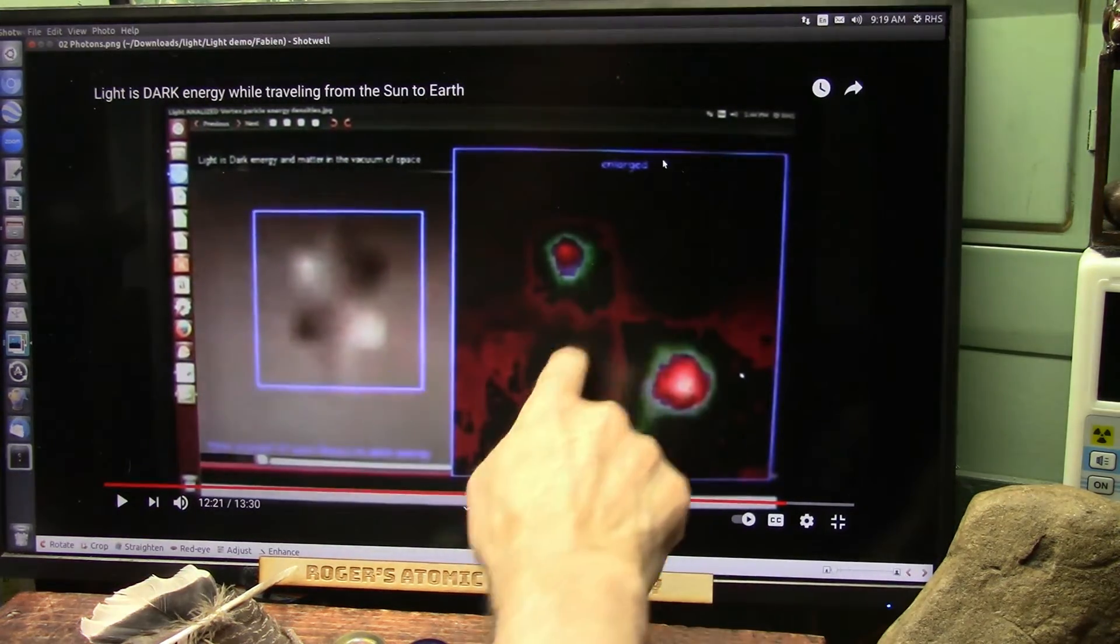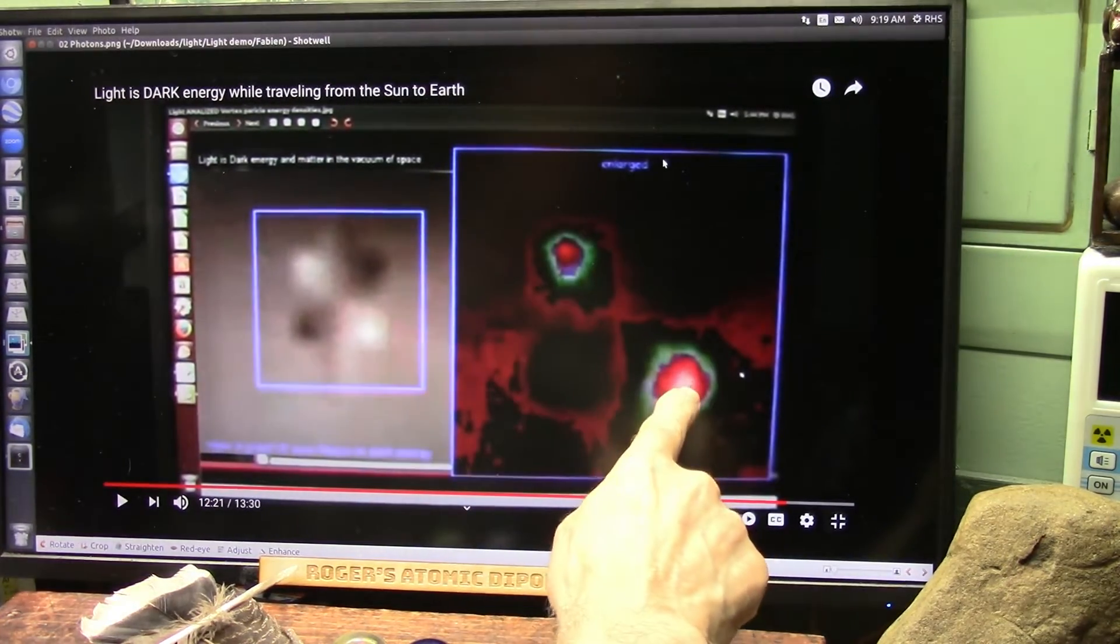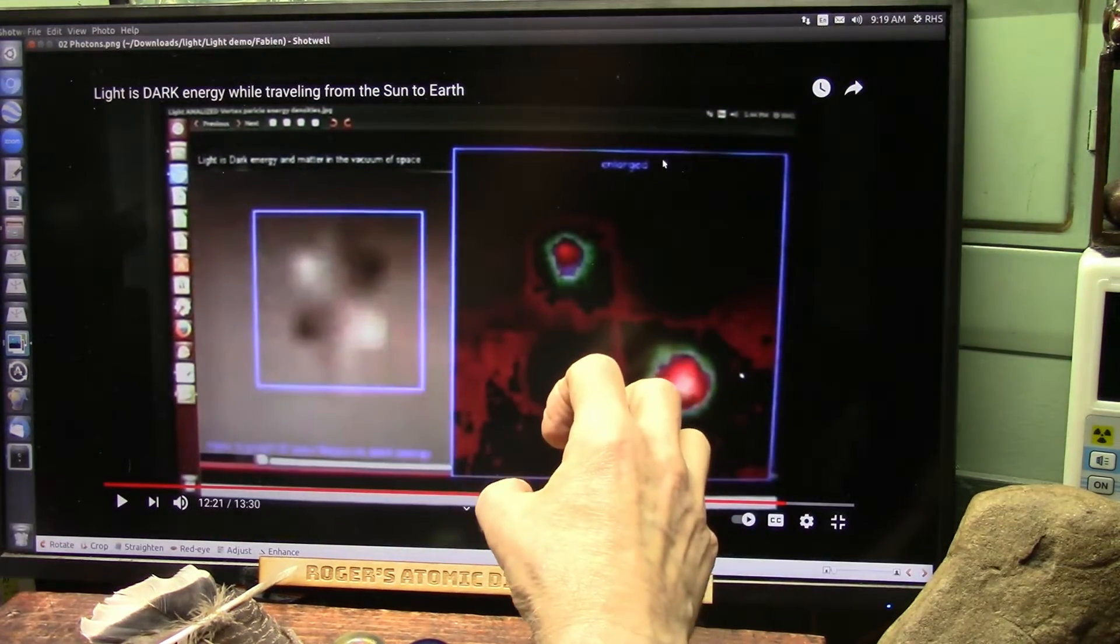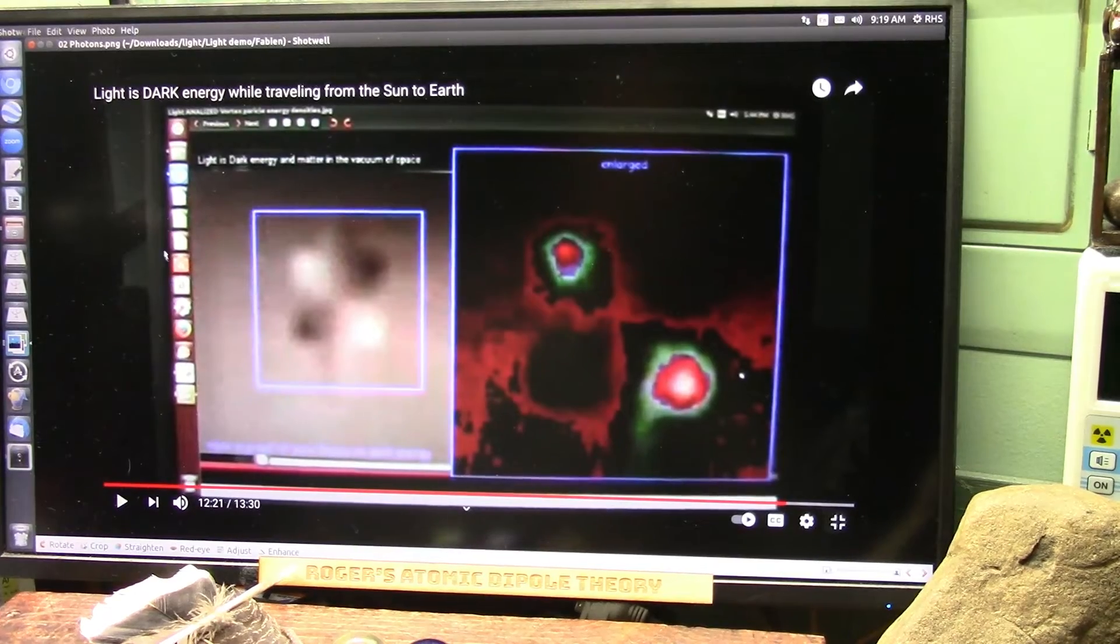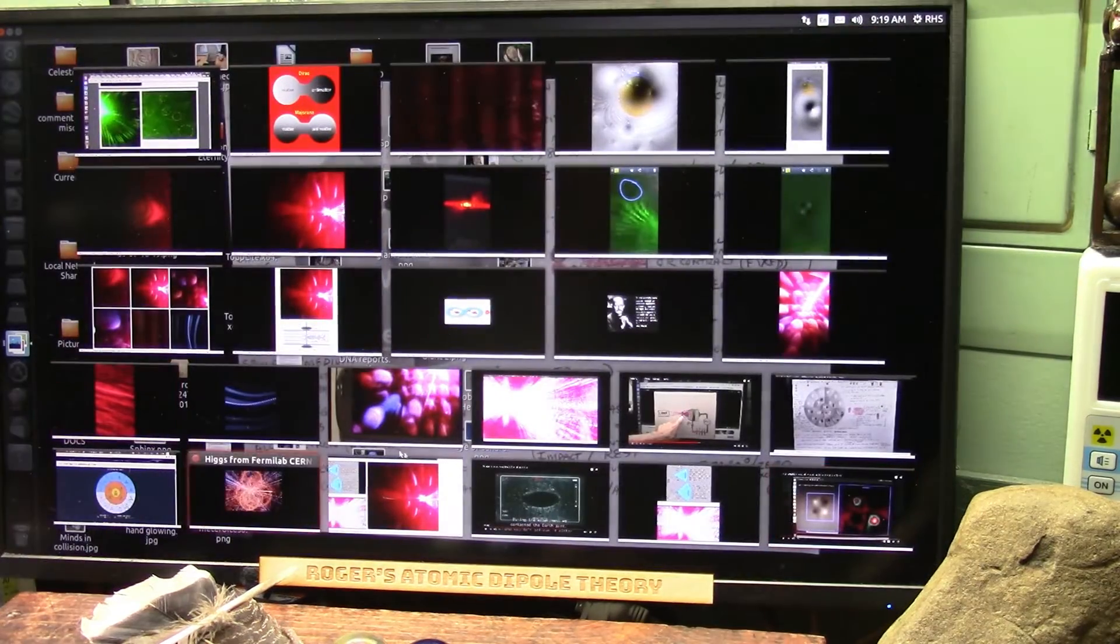The dark matter wants to absorb this white matter back and collect it around itself, just like we saw the Russians in space. They showed exactly that happening. That's what happens.